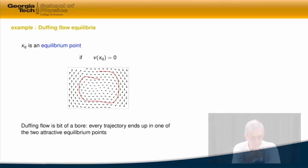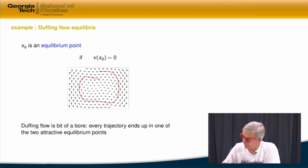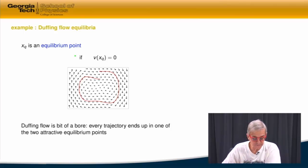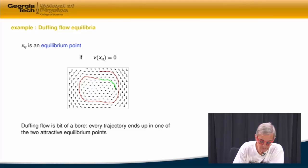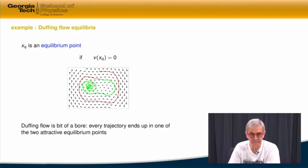Let's understand what equilibrium is. An example is a Duffing equation I showed you before. In the Duffing equation, you start any place, the flow goes on for a while, there's something happening, and it stops. Now being deterministic, flow actually cannot cross itself, so my figure was somewhat wrong.